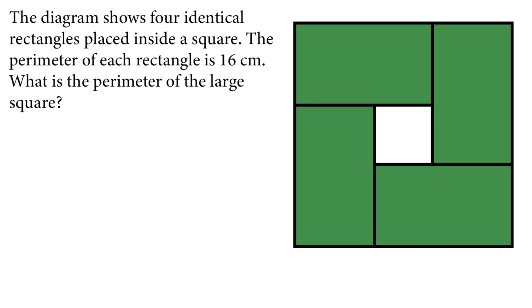Hello everyone, in this video we will solve this geometric question. The diagram shows four identical rectangles placed inside a square. The perimeter of each rectangle is 16 centimeters. What is the perimeter of the larger square?